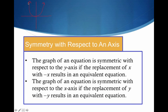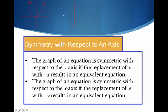Let's talk about x-axis symmetry. The graph of an equation is symmetric with respect to the x-axis if the replacement of y with negative y results in an equivalent equation. So what does that mean? If I fold on the x-axis, then I get my function on top of each other. Minus my terrible drawing skills, this is an example of x-axis symmetry — I have a mirror image on the other side of the x-axis.